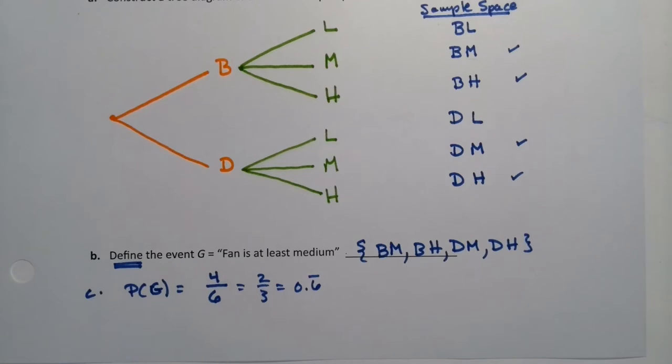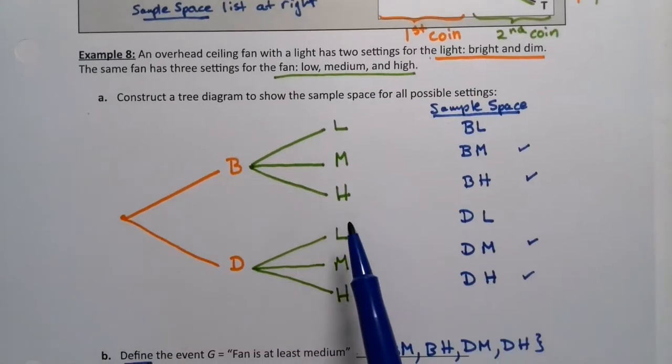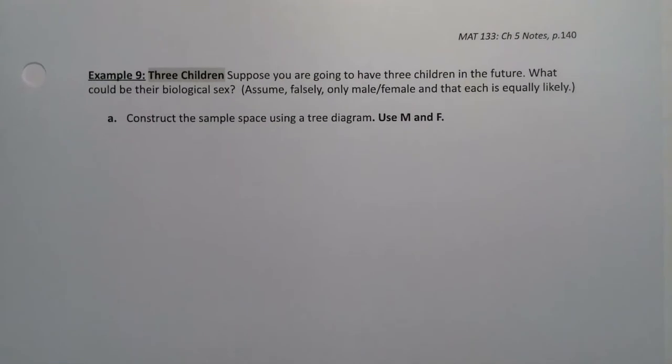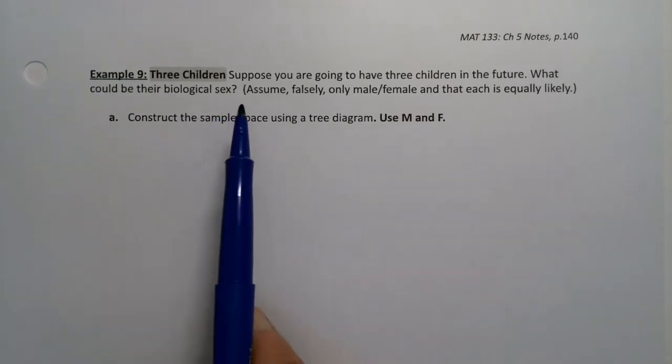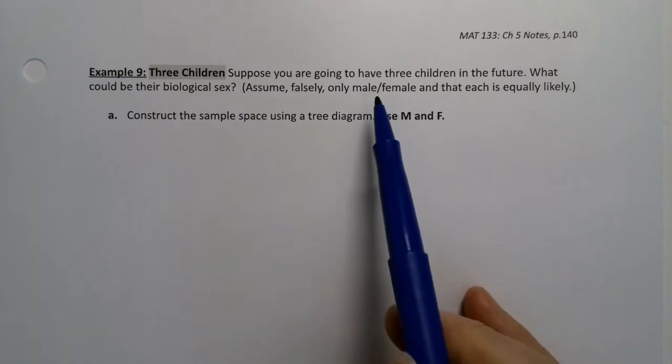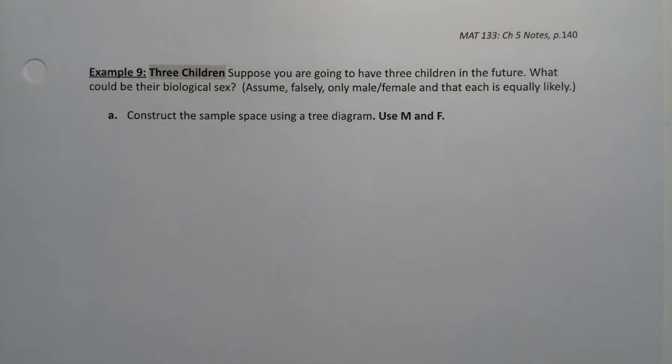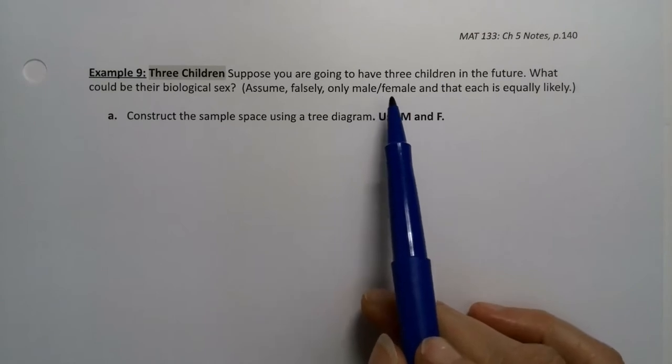Now let's do it for a slightly more difficult problem. So both of these were 2. So we had 2 coins or 2 settings on this overhead ceiling fan. But now we're going to have 3. So we're going to suppose that we have 3 children in the future. You can just imagine it. What could be their biological sex? So we're going to assume, falsely actually, that there's only male, female, and that each is equally likely. Both of which are incorrect assumptions. If you take any kind of basic biology class, you'll find out that there are many children that are born intersex. Feel free to look that up.